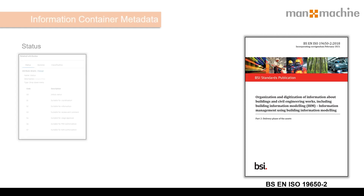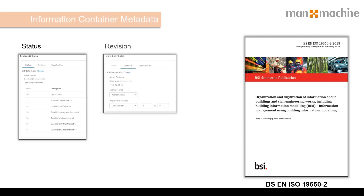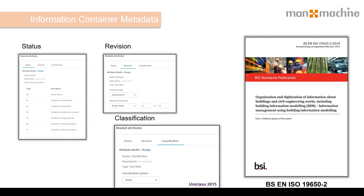I also want to consider the information container metadata such as status codes, revision, and classification. Now in the UK we use UniClass, so this is what we'll be specifying. Okay, let's take a look.